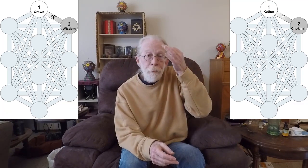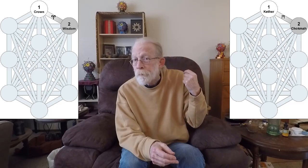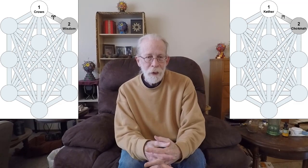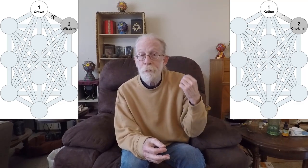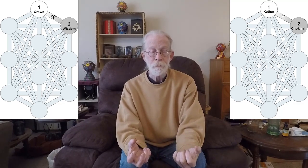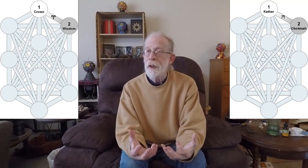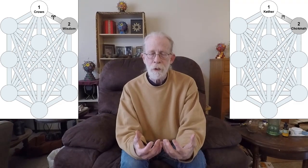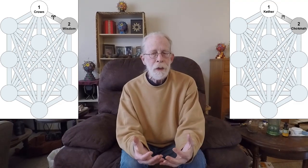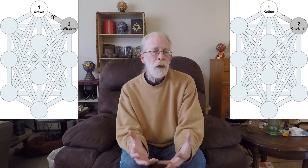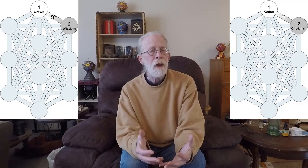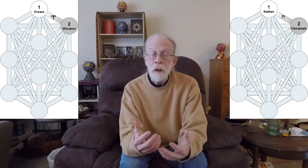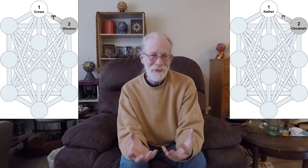The first gate is Kether to Chokmah via the path of Heh, the path of Aries. You can refer to my previous videos to get the details of these three components of this gate. We start with the 'I'. To work this gate, you have to sink yourself into the 'I' as deeply as you can — you want that to be your exclusive focus: the infinite 'I', the infinite conglomeration of awareness, awareness of all things.